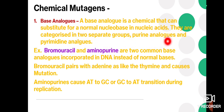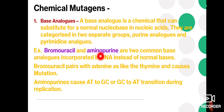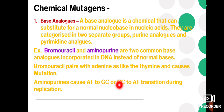Base analogs are substitutes for particular nitrogenous bases — purines or pyrimidines — and can substitute into the structure of genetic material. For example, bromouracil and aminopurine are the most common base analogs incorporated into DNA instead of normal bases. Bromouracil is a base analog that can substitute for uracil; it pairs with adenine just like thymine and causes mutation. Similarly, aminopurine causes adenine-thymine to guanine-cytosine, or guanine-cytosine to adenine-thymine transitions during replication.